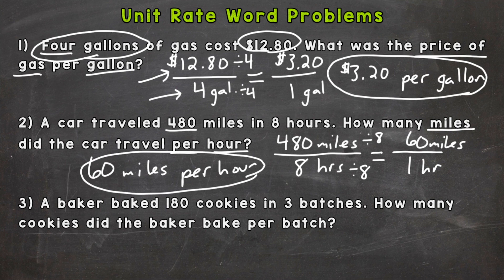Number three. A baker baked 180 cookies in three batches. How many cookies did the baker bake per batch? So fractional ratio first. Let's check the order. And it says how many cookies did the baker bake per batch? So cookies comes first. So that will be on top. 180 cookies.